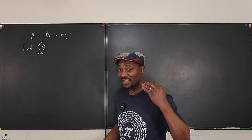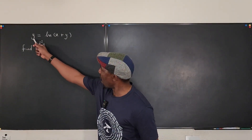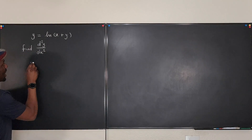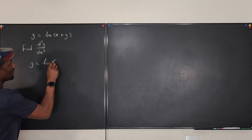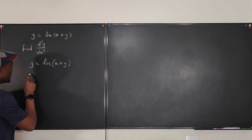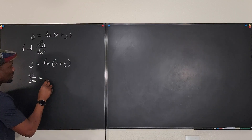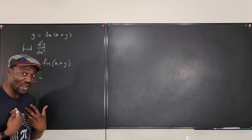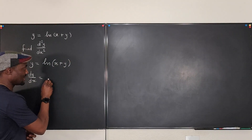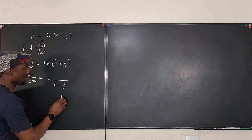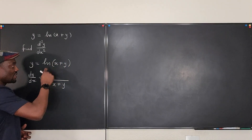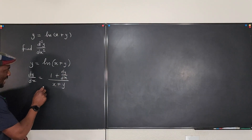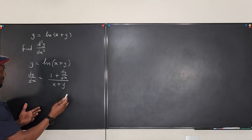We're going to take the implicit derivative of y, because y is also in the argument of the natural log, so it has to be implicit differentiation. We have y equals ln(x plus y). For dy/dx, we take the derivative of the natural log: differentiate the argument and place it over the argument. Differentiating x gives one, differentiating y gives dy/dx.